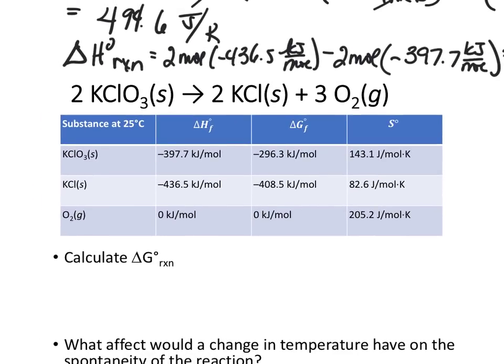Now we've got a couple ways that we could do this. We could calculate the standard delta G by using the standard delta H minus T times the standard delta S, which we've already calculated. And by doing it this way, we have a delta H value that we've already calculated, which was a negative 77.6 kilojoules, minus the temperature, which it tells me it was at 298 or 25 degrees Celsius, 298 K,